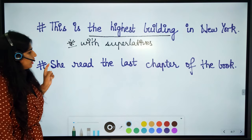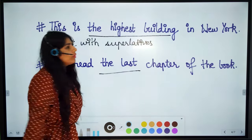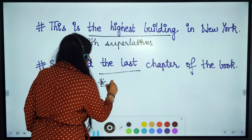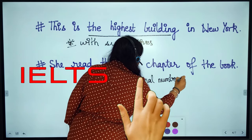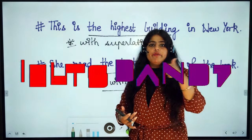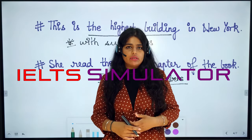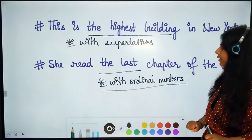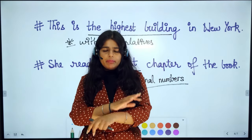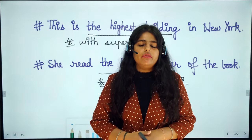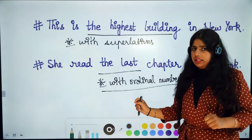The next sentence is: 'She read the last chapter of the book.' The word 'last' is an ordinal number. Ordinal numbers include first, second, third, fourth, fifth, sixth, seventh, eighth, and so on — including 'last.' With ordinal numbers, we also use 'the.' So with both superlatives and ordinal numbers, we use 'the.'